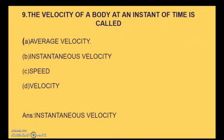The velocity of a body at an instant of time is called — options are: average velocity, instantaneous velocity, speed, and simply velocity. Answer is instantaneous velocity.